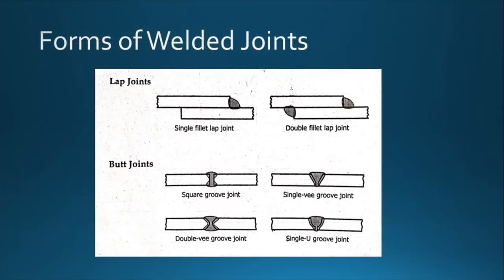These are the forms of welded joints — referring to the position of the members being connected. It is called a lap joint when the members overlap one another. For butt joints, the members are not overlapping; instead, the edges or corners are beveled, creating a groove before welding. There are different kinds of welds which will be discussed further.